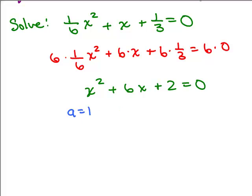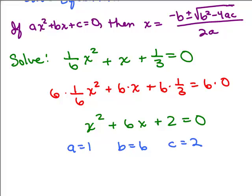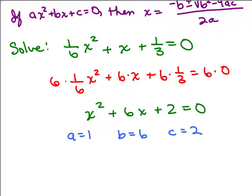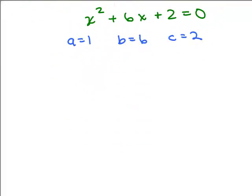So in this case a is 1, b is 6, and c is 2. Hopefully you'll agree that's a little bit easier than plugging in 1/6, 1, and 1/3 for the values of a, b, and c. We're going to plug this into the quadratic formula now.